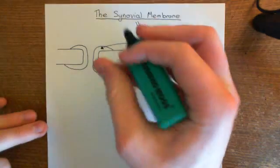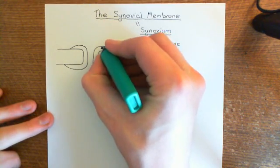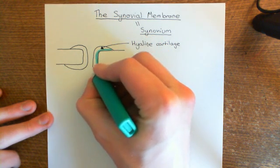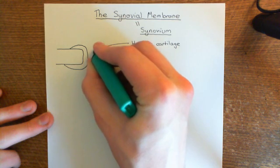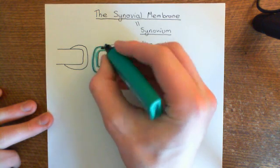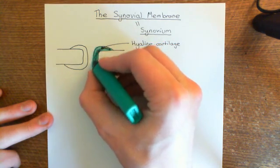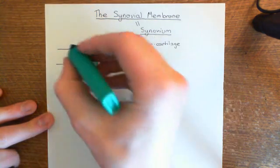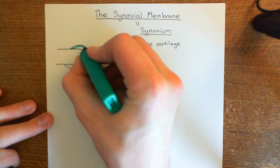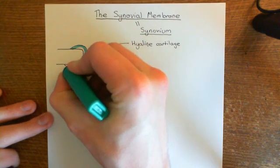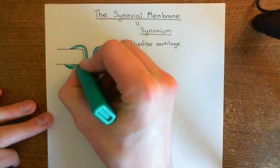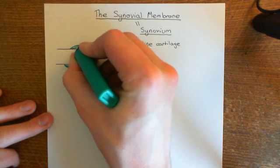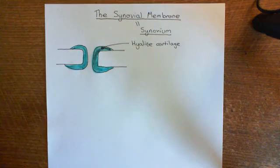Here in turquoise is the hyaline cartilage which covers the terminal ends of these bones. And then what's going to happen is we're going to have a joint capsule covering the entire thing. So there's the cartilage, and here is this hyaline cartilage over this bone. So you're now going to have a joint capsule over the surface of this entire thing.